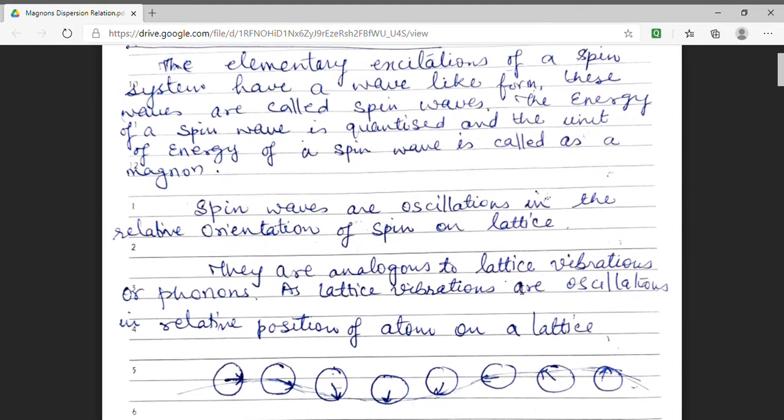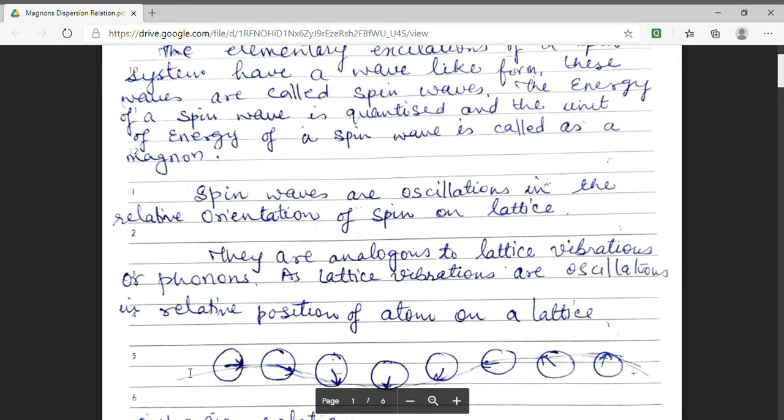Now, I am clearly showing my spin wave by a diagram. Here, I have shown different atoms in a lattice and the arrow denotes the direction of spin of different atoms. Here we can see clearly that spin direction changes in a prescribed fashion and this results in a shape which is analogous to a wave.